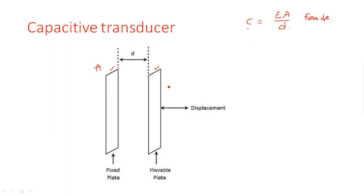When both plates are fixed, d is fixed, A is fixed, and ε is a constant, so capacitance C is also fixed. But in the capacitor transducer, one plate is fixed and the other is mobile. Displacement is applied to the mobile plate, which moves back and forth. Because of this movement, the area of the plates does not vary, but the distance between the plates changes — it can become larger or smaller depending on the direction of movement.